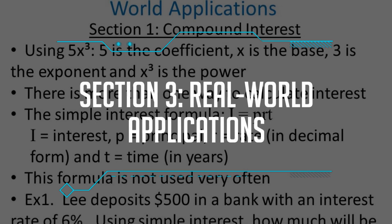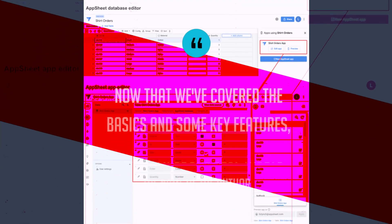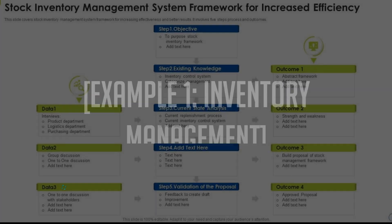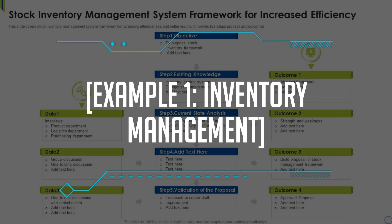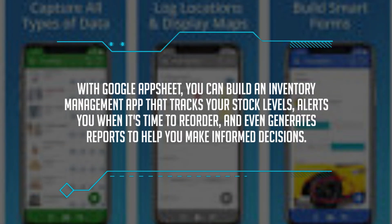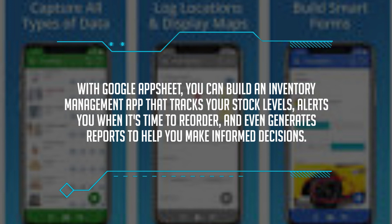Section 3: Real-world applications. Now that we've covered the basics and some key features, let's talk about real-world applications of Google AppSheet. Example 1: Inventory management. Imagine you run a small business with a stockroom full of products. With Google AppSheet, you can build an inventory management app that tracks your stock levels, alerts you when it's time to reorder, and even generates reports to help you make informed decisions.